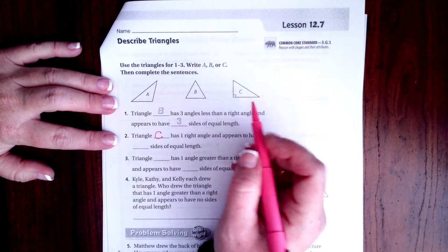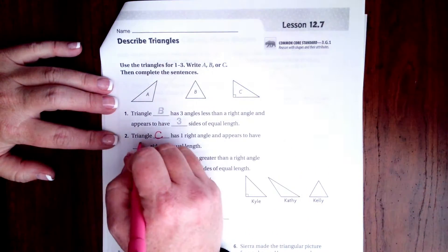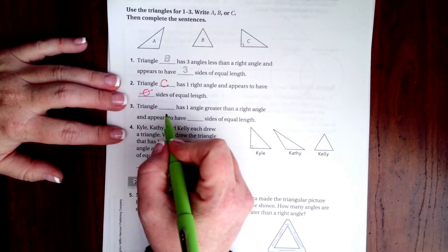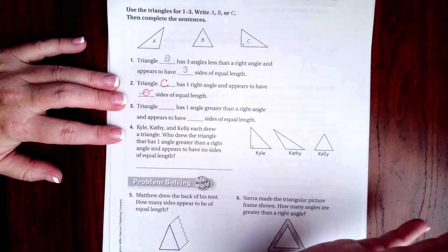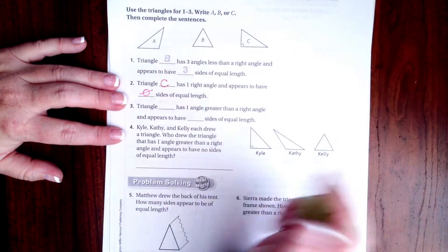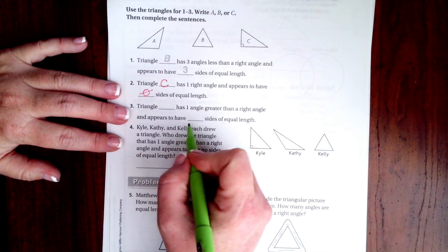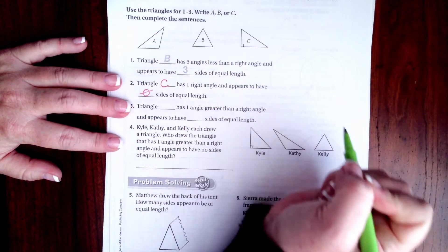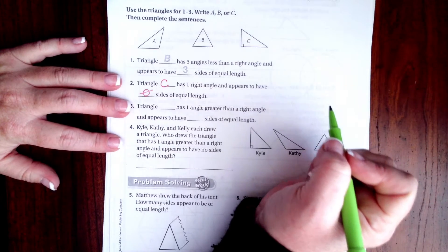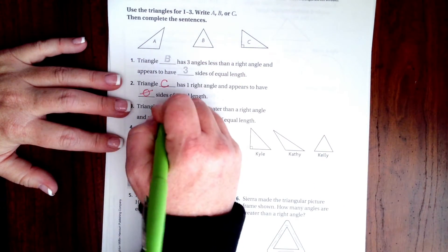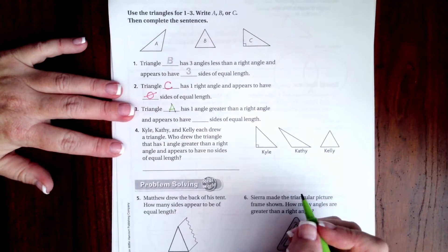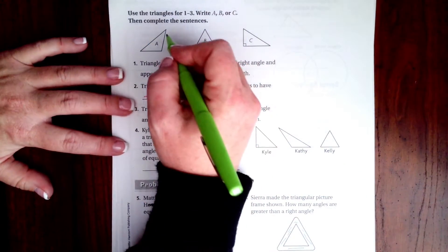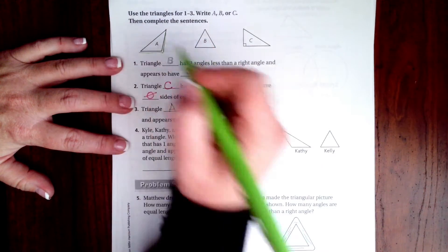Triangle blank has one angle greater than a right angle, so it's open wider, and appears to have blank sides of equal length. Well, the only one that has an angle that is wider than a right angle is going to be A. Now, how many of those sides seem to be the same size? I would say that this side and this side are the same size, that's two.